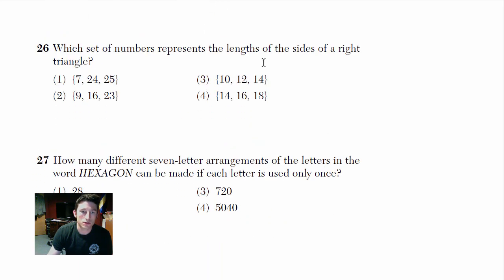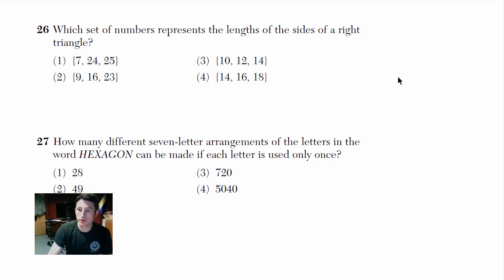Let me zoom back in. Which set of numbers represents the length of a side of a right triangle? Well, here's a nice little trick. Right triangles, the two that I know for the SAT that they usually test and are good to know are the 3, 4, 5, and the 5, 12, 13. So right off the bat, this is the 10, 12, 14 one.